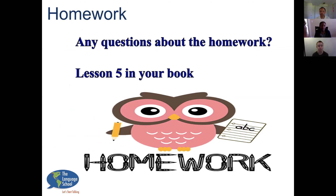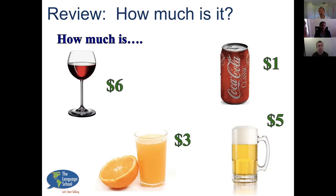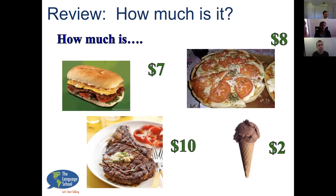So you should have done lesson number five in either your workbook or the application. Thanks to everybody that has done that. Let's start by reviewing some of our smaller numbers. Take turns asking each other these questions. Megan, how much is a glass of wine? A glass of wine is $6. How much is a soda? A soda is $1. How much is an orange juice? $3. How much is a beer? $5. How much is a sandwich? $7. A pizza is $8. A steak is $10. The ice cream is $2.